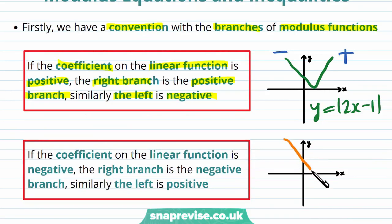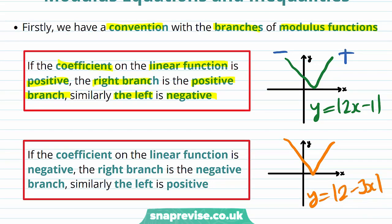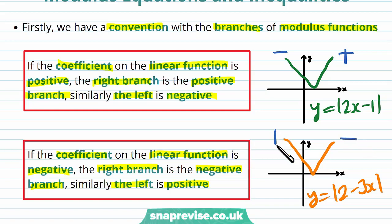Similarly, if we had the graph of y equals the modulus of 2 minus 3x, then we label as follows. If the coefficient on the linear function is negative, the right branch is the negative branch and similarly the left is positive. So here we have the modulus of 2 minus 3x — the coefficient on the x term is minus 3, which is negative, and so we label the right branch as negative and the left branch as positive.